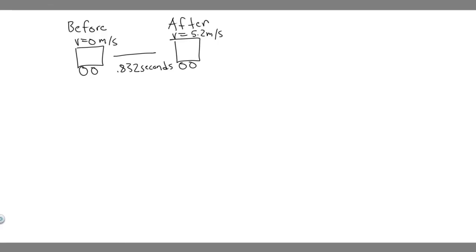In this problem, we're told a car is stopped for a traffic signal. When the light turns green, the car accelerates, increasing its speed from 0 to 5.2 meters per second in 0.832 seconds. What are the magnitudes of A, the linear impulse, and B, the average total force experienced by a 70 kilogram passenger in the car during the time the car accelerates?